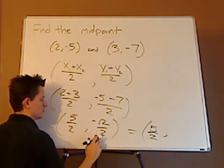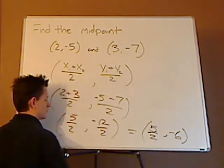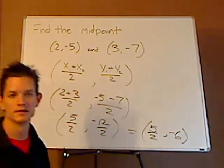Negative 12 over 2 gives you negative 6. You simply divide. And that's it.